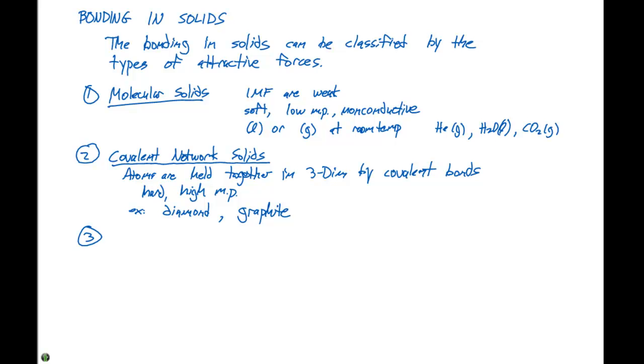The third, we have metallic solids. In metallic solids, we have an array of metal cations held together by mobile electrons, and sometimes you'll hear this characterized as the electron sea model.